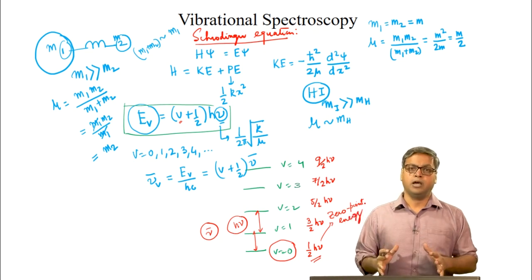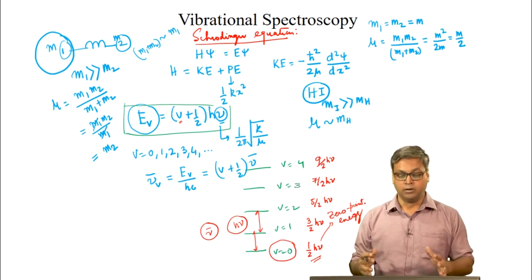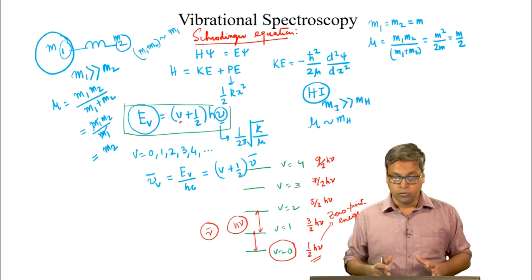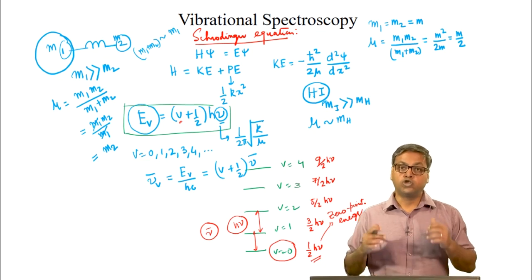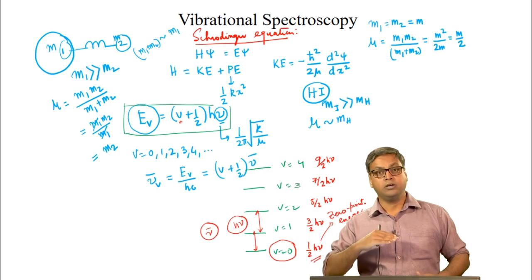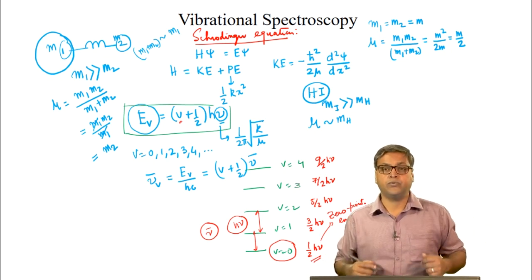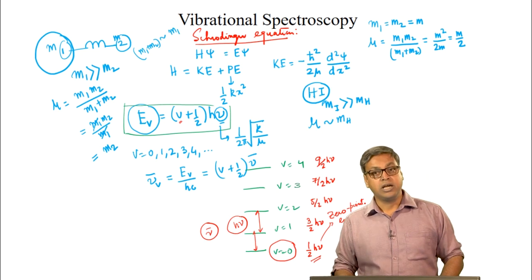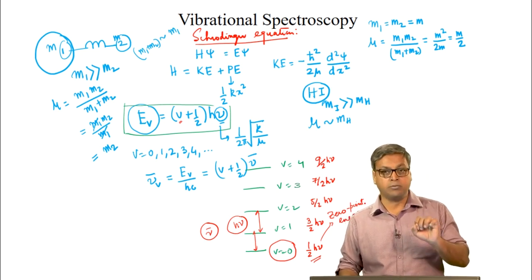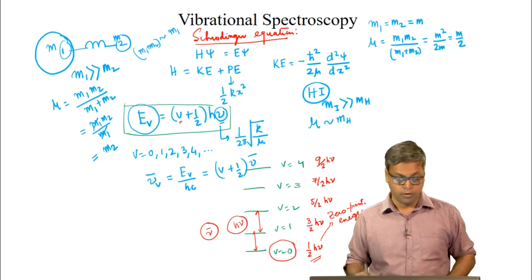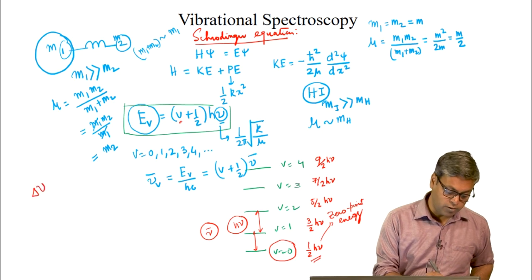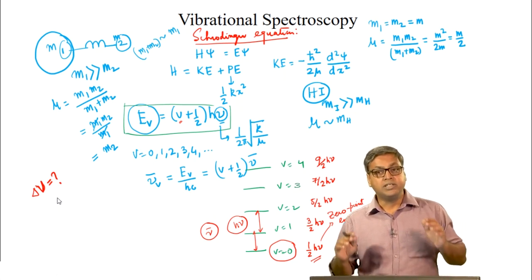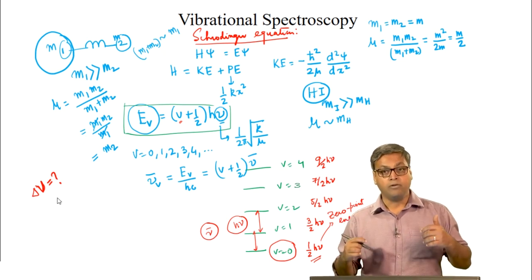The prediction of the zero point energy is the basic difference between classical and quantum approaches to molecular vibration. Classical mechanics finds no objection to a molecule possessing zero vibrational energy, but quantum mechanics says the molecule must always vibrate to some extent. In order to obtain a vibrational spectrum, transitions must occur from one vibrational energy level to another, and we must ask what change in the vibrational quantum number δv is allowed.